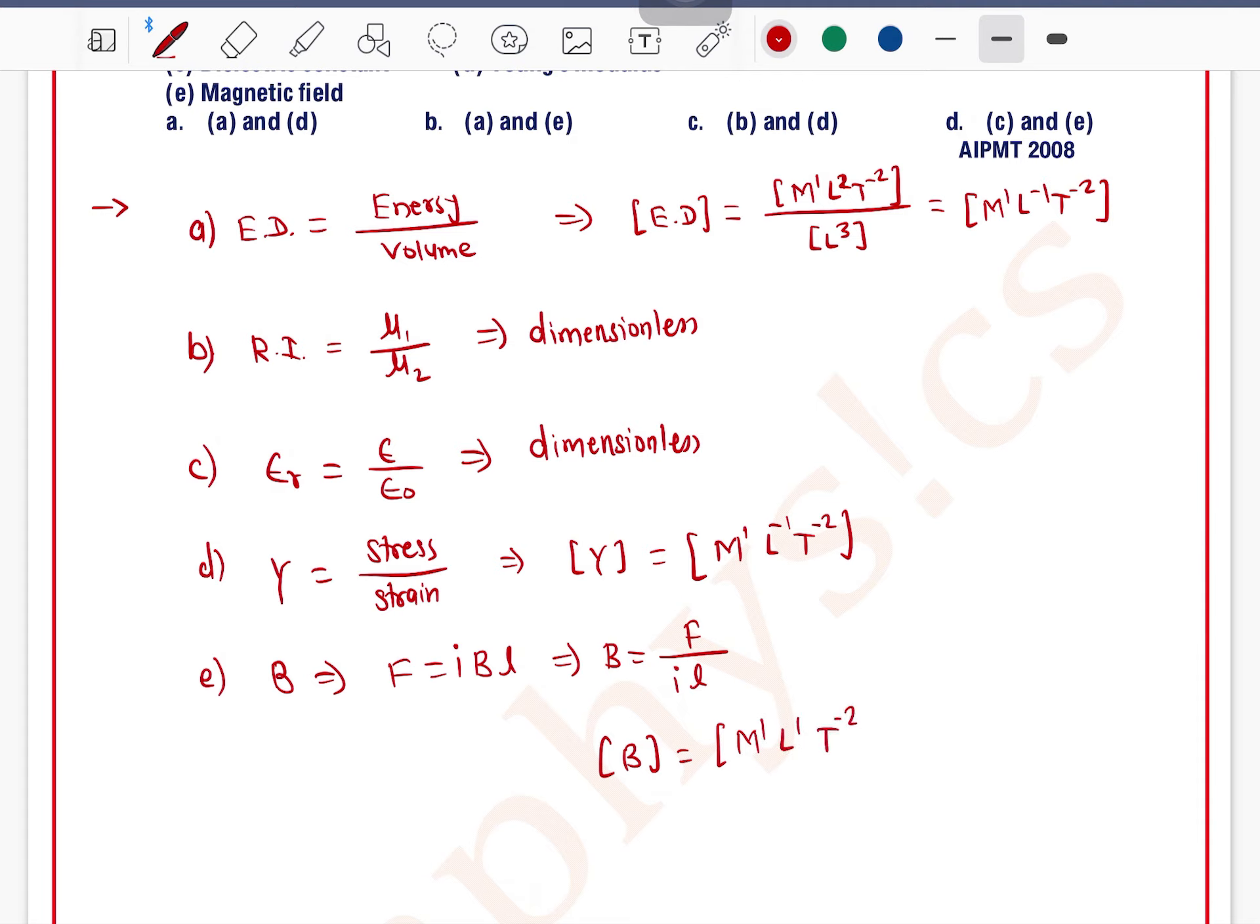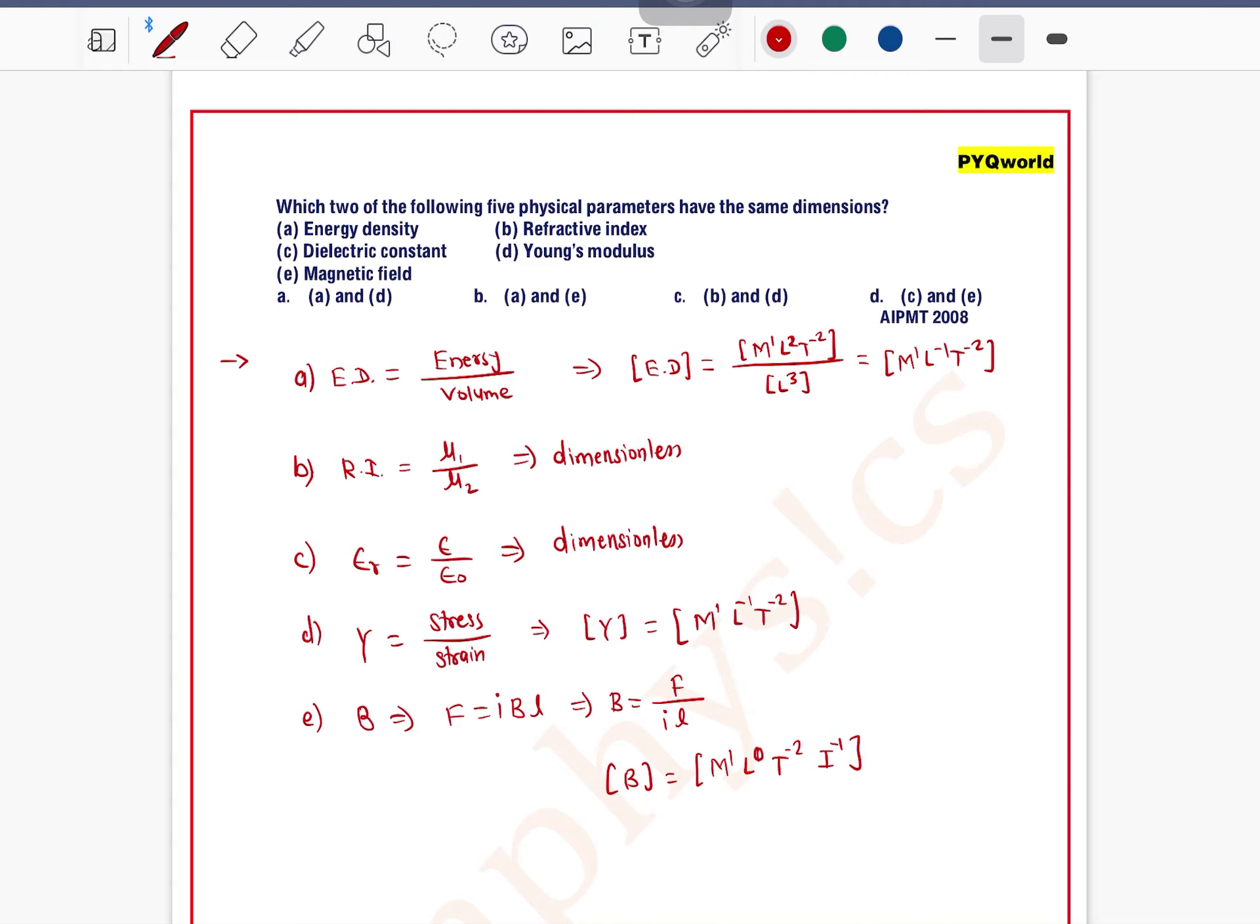See, option A and option D are matching. B and C are also matching, so two options are correct here. We'll tick on A and D. A and D means option A is correct.